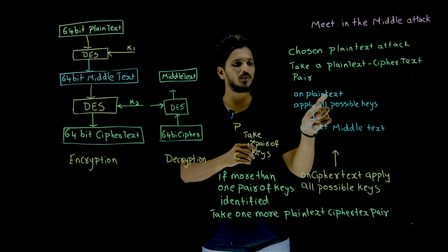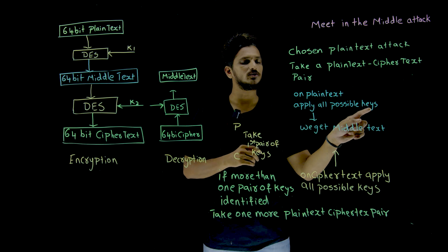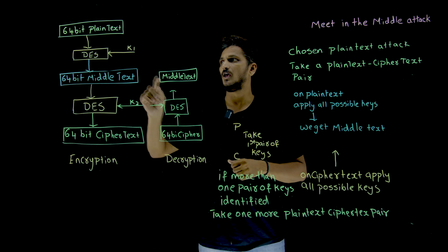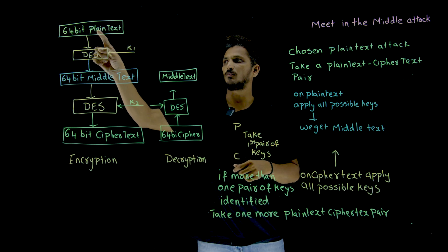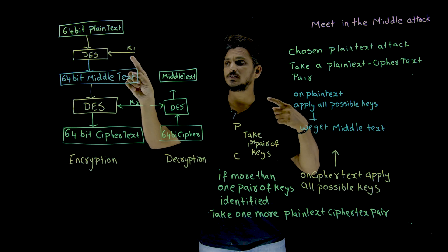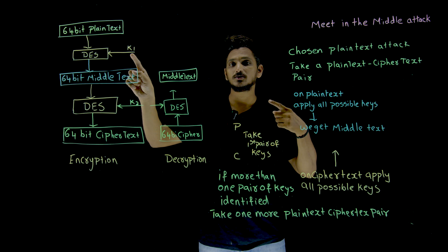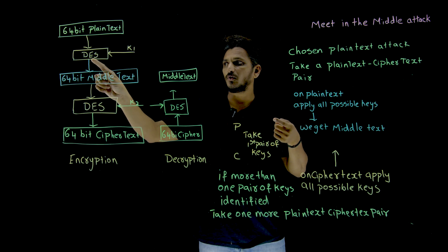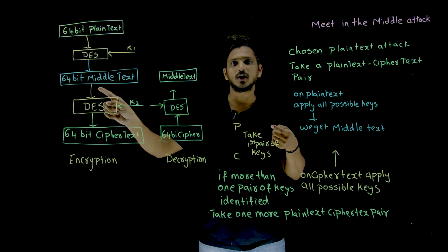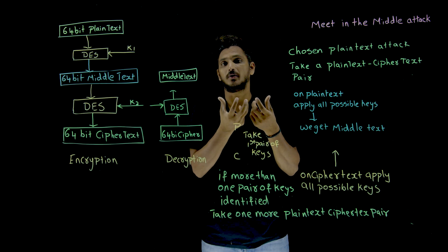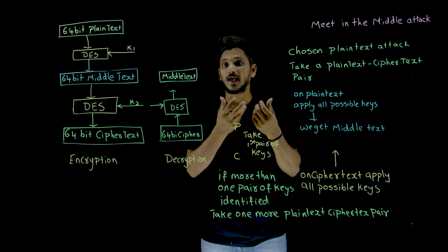On the plaintext side, apply all possible keys and apply DES. There are 2 power 56 possible keys to apply. You apply DES and get the output — we call this the middle output, a 64-bit middle text.